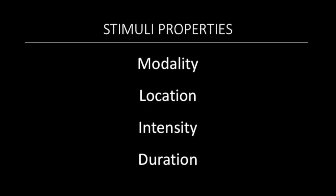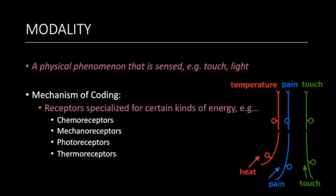Receptors transmit four kinds of information on the properties of stimuli: modality, location, intensity, and duration. Modality of a stimulus is a type of physical phenomenon that is sensed by different specialized receptors which attune to certain kinds of energy such as touch or light. Humans have several including chemoreceptors, mechanoreceptors, photoreceptors, and thermoreceptors.